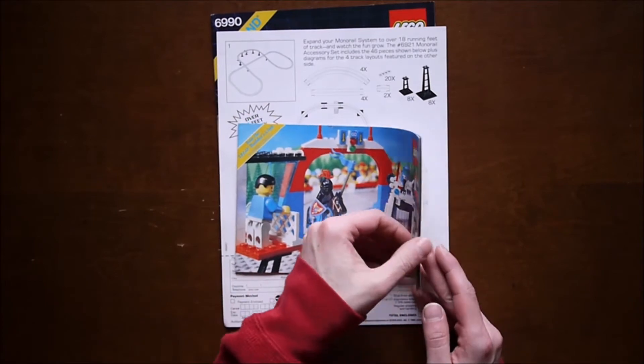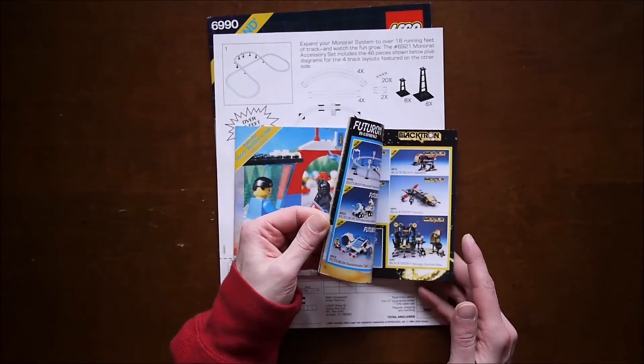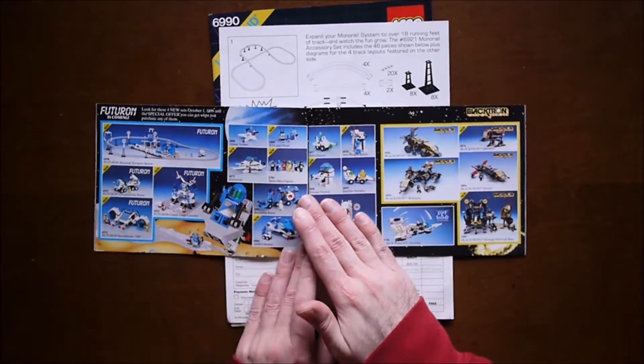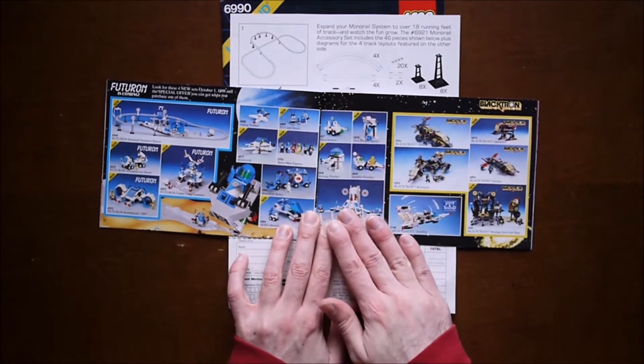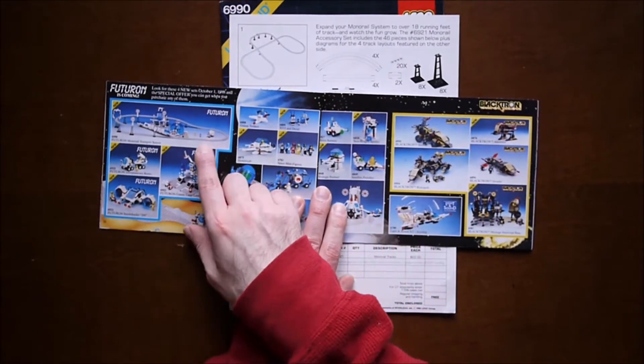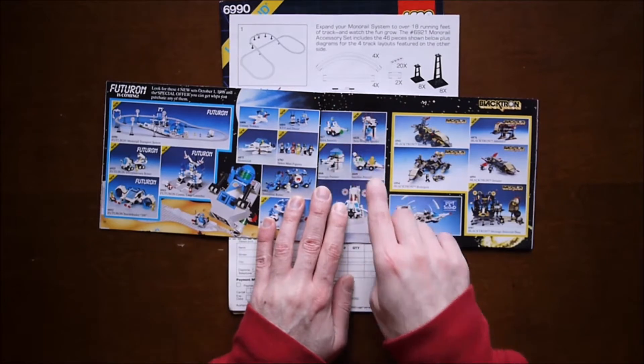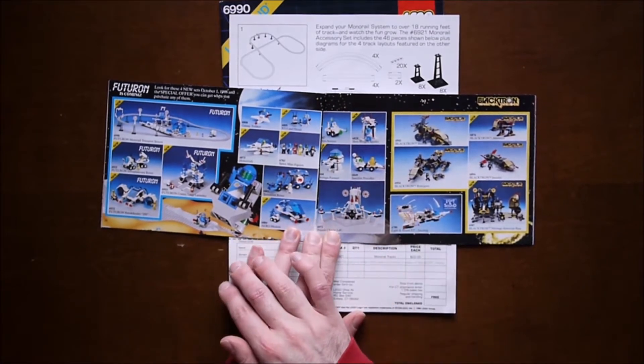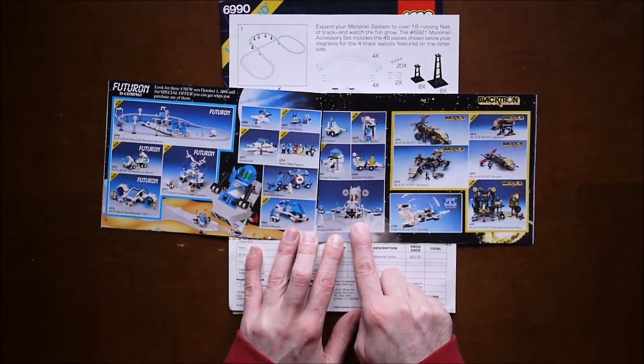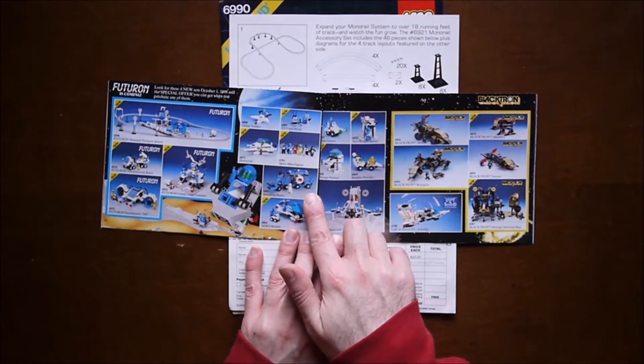Of course it comes with a catalog. Just jump to the space page, so you can see there were a bunch of Futuron sets. I don't know if I own any more than the monorail, maybe some of these tiny vehicles, but there weren't too many big sets. There's this nice space lab here, and then mostly some vehicles.